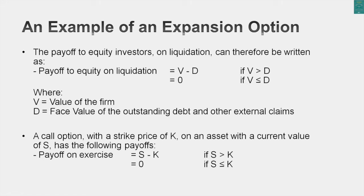If I use that limited liability and the right to liquidate together, I have the makings of an option. Let's assume you're the equity investor in a firm with a value V, and you have some debt outstanding with a value D. If the value of the business exceeds the debt, you liquidate the firm and get the difference V minus D. If the value of the firm is less than the outstanding debt, you have limited liability, so your cash flow is zero. That looks very much like a call option — replacing V with S and D with K gives you the standard call option setup.